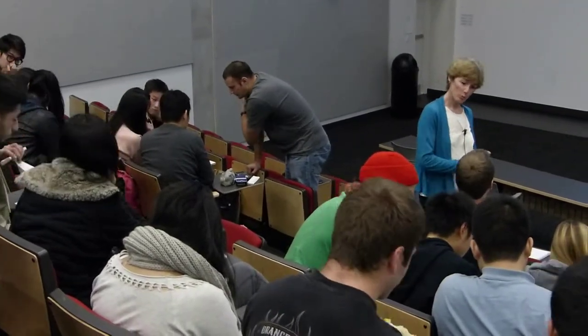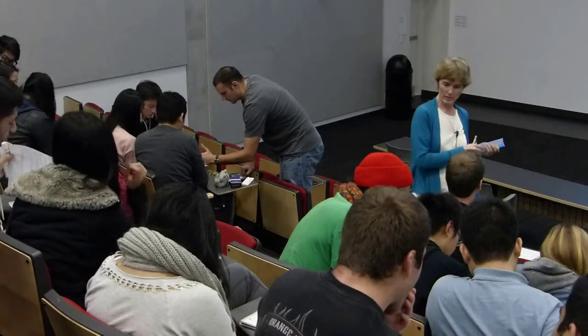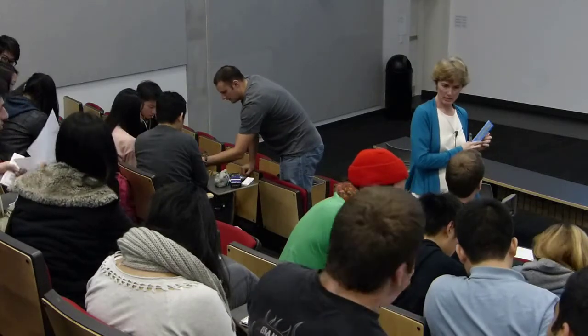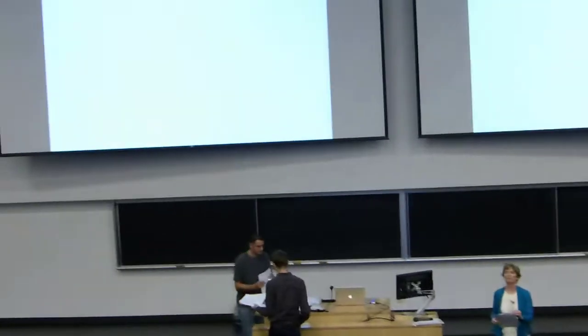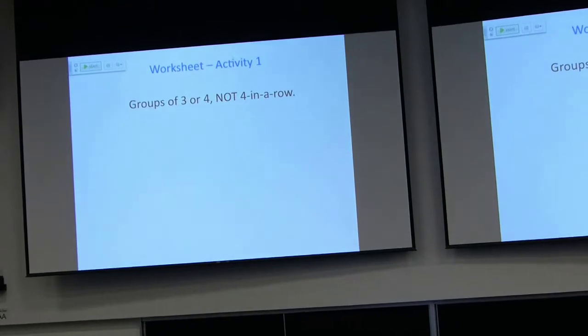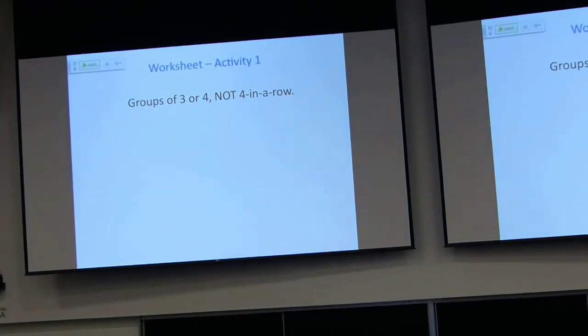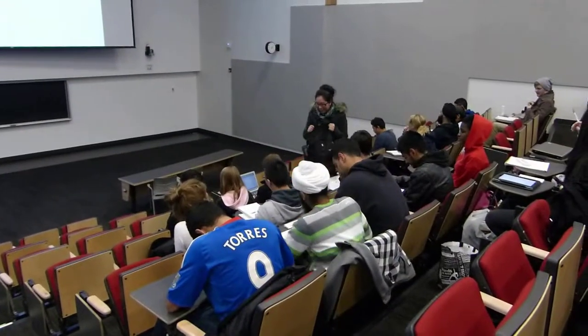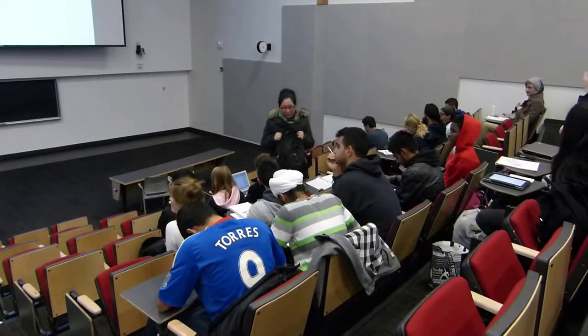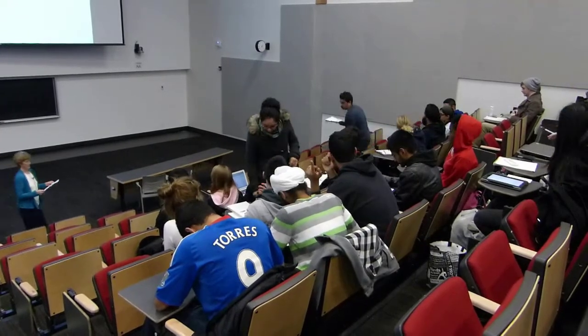This course is a third-year elective taught to 150 or more science majors. Worksheet-based group activities are done in every 80-minute class, so students know what to expect. As the instructor sets up the task, teaching assistants distribute worksheets to groups of four.